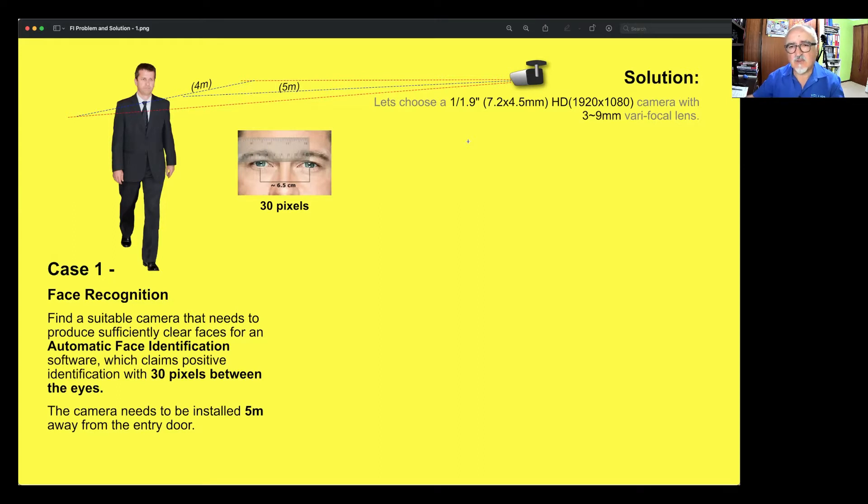We chose to have a varifocal length of three to nine millimeters. Why did I choose this camera? This is an example, can be any camera, but typically I obviously will use some reasoning behind. In this instance, the larger the sensor is with the lesser pixel count, the larger the pixels will be, which means the low light sensitivity of that camera will be better. So instead of using a sensor of the same size at 4K resolution, I prefer in this instance to use 1920 by 1080 for the sake of case study, but also explaining why I'm choosing this.